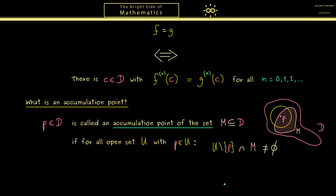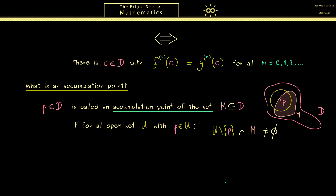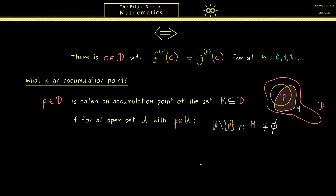This notion of an accumulation point is always important if you want to form limits. Therefore this term occurs a lot in different branches of analysis. Here in the complex plane it is not so hard — the visualization is very clear. To get the correct idea, let's look at some examples.